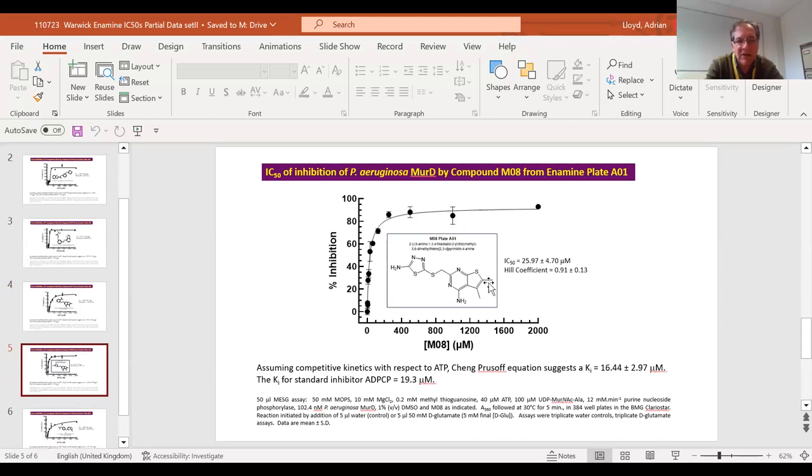Similarly, compound M08 has a much more attractive IC50 of 25 micromolar. That's basically in the region of what we were seeing with J06 previously. It actually binds tighter than the standard inhibitor we use in our assays, which is ADP-CP. Again, that would be something I would earmark if I wanted to take things forward.